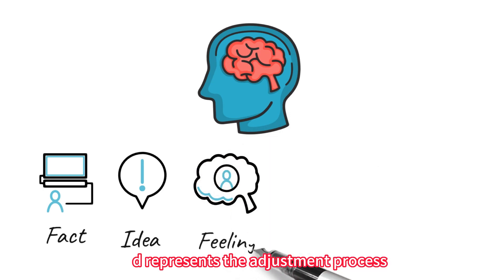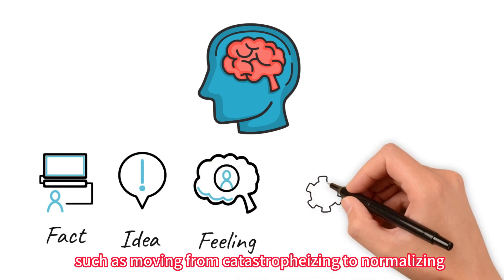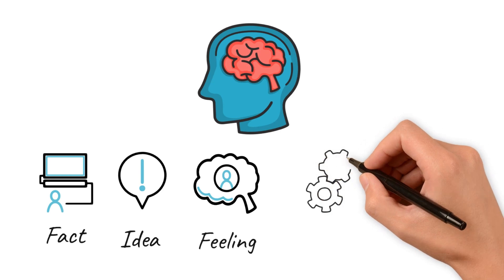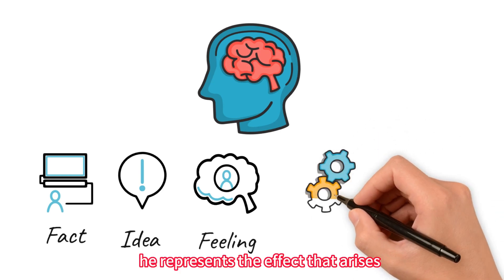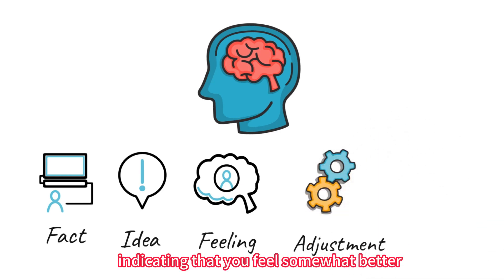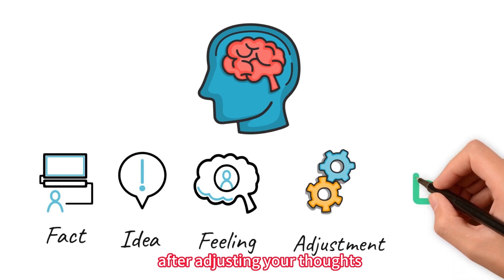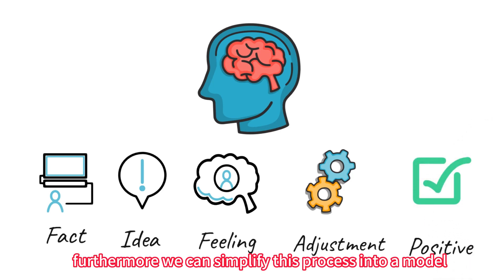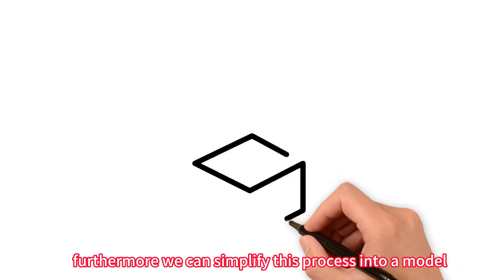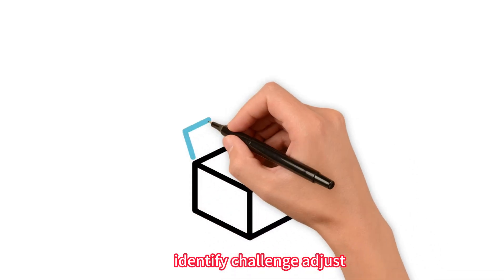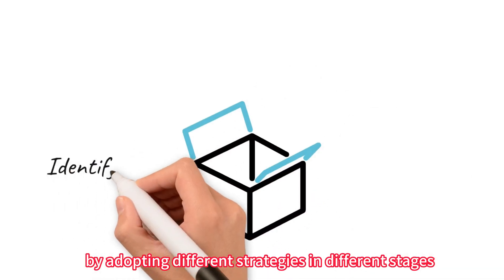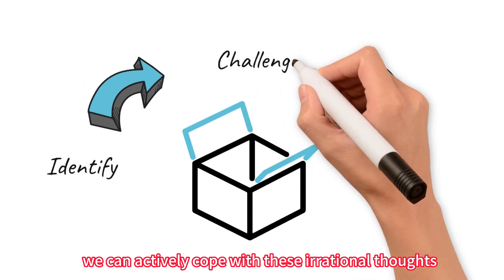D represents the adjustment process, such as moving from catastrophizing to normalizing. E represents the effect that arises after the adjustment, indicating that you feel somewhat better after adjusting your thoughts. Furthermore, we can simplify this process into a model: identify, challenge, adjust. By adopting different strategies in different stages, we can actively cope with these irrational thoughts.